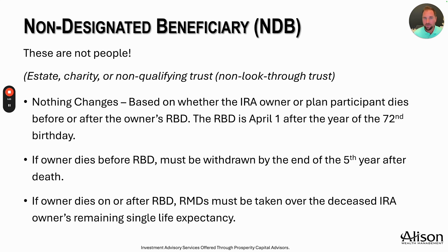The first type is the non-designated beneficiary or NDB. These are not people. This beneficiary designation is typically an estate, a charity, or a non-qualifying trust — also known as a non-look-through trust. If a family member forgot to name a beneficiary on their IRA or 401k, by default that account is payable to the estate. A charity named as beneficiary is also an NDB, as is a non-look-through or non-conduit trust.